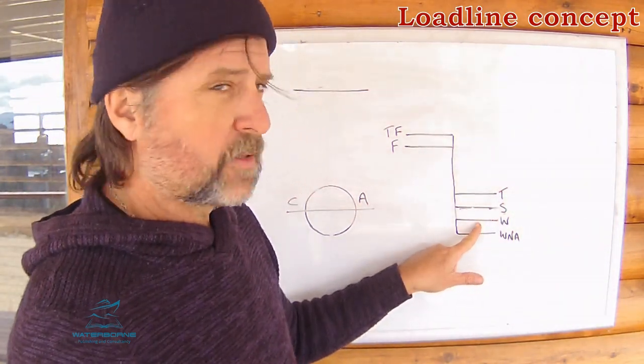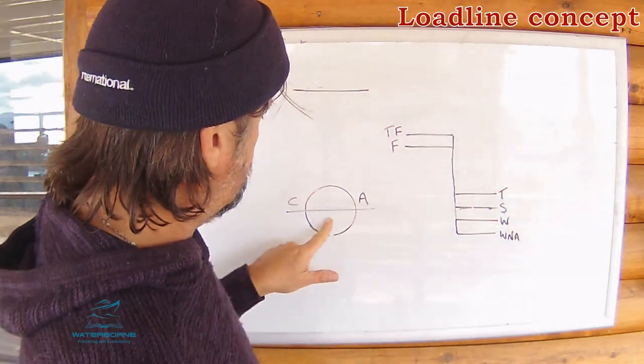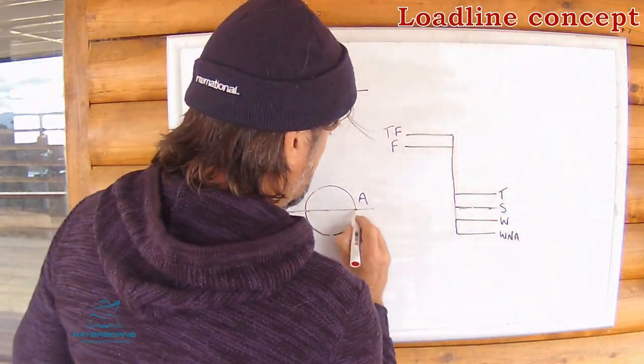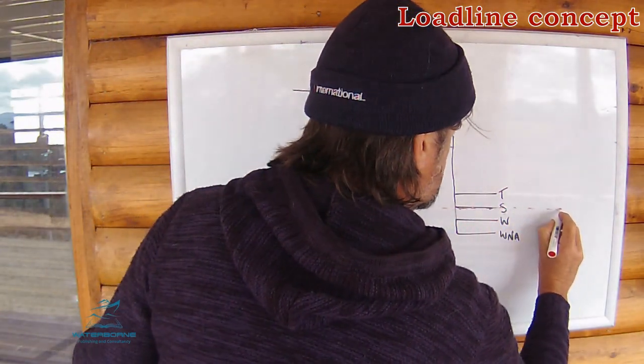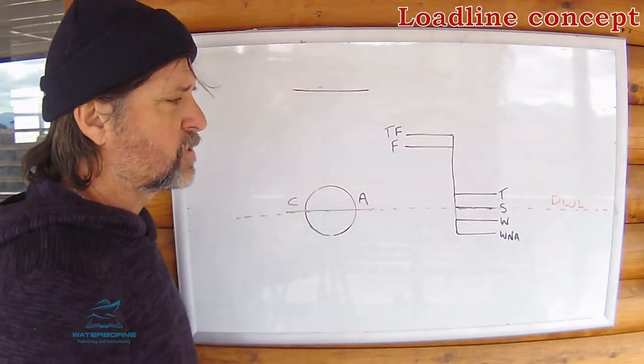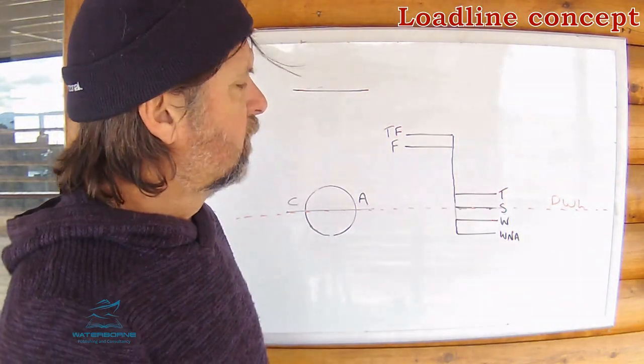Above that, we have winter, then we have summer, and the summer line is located where the Plimsoll mark over here is located. So I'm just going to draw a little bit of a line through there to indicate that this is actually where the vessel's designed water line, sometimes known as summer draft or summer water line is. Above that, tropical.